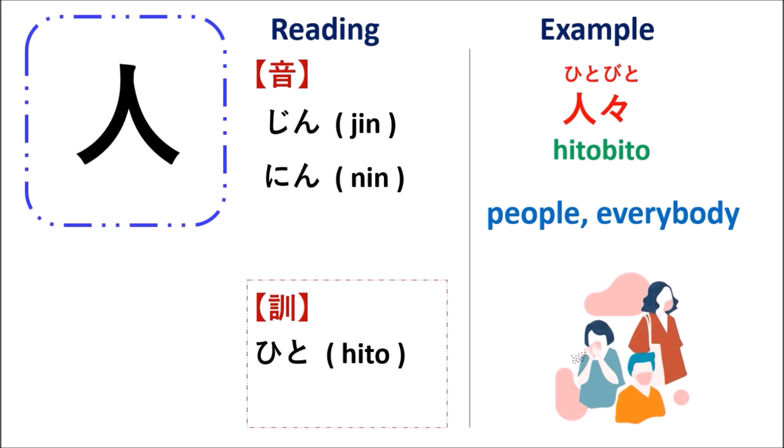Another word is hitobito, which means 'people' or 'everybody around you.' You use this word when you don't want to specify anyone's name and just want to refer to people in general.